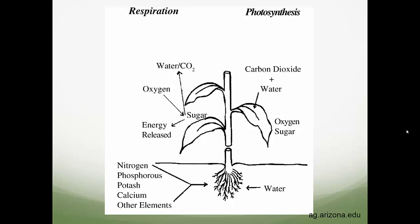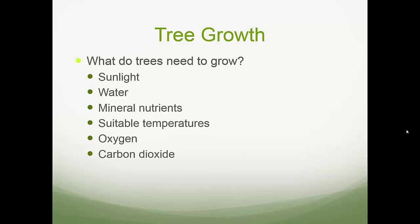Here are a few different pictures of respiration and photosynthesis to help jog your memory from biology courses. What do trees need to grow? That comes down to sunlight, water, mineral nutrients, suitable temperatures, oxygen, and carbon dioxide. These are the foundational aspects of what trees need to grow.